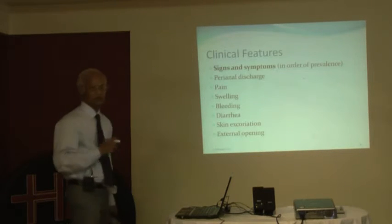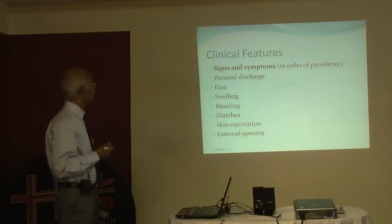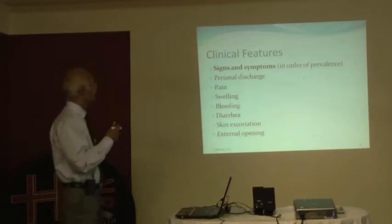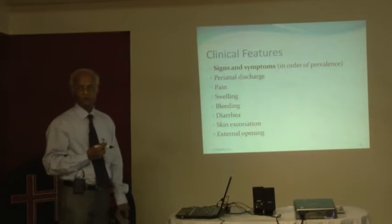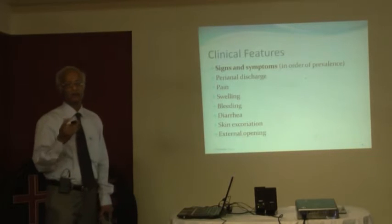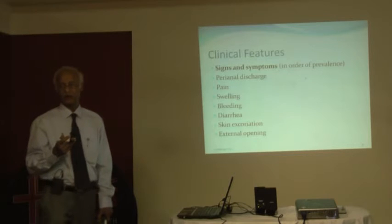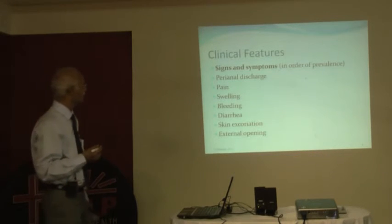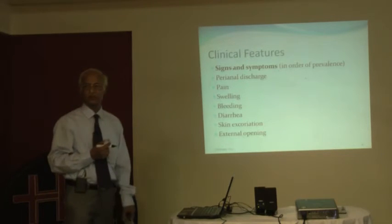What are the clinical features? How does the patient manifest? In order of prevalence, there will be a perianal discharge, pain, swelling, and bleeding — because the fistula tract is lined by granulation tissue, and that granulation tissue has a tendency to bleed. Sometimes the patient has diarrhea, skin excoriation, and an external opening.